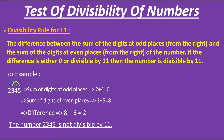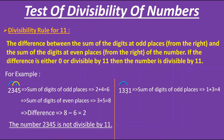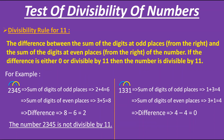I will take one more example. I am taking the number 1331. First, we find the sum of digits at odd places — the 1st and 3rd places are 1 and 3. So 1 + 3 = 4. Now we find the sum of digits at even places — the 2nd and 4th places are 3 and 1. So 3 + 1 = 4. The difference is 4 − 4 = 0. As per the rule, we got 0. Therefore, the number 1331 is divisible by 11.